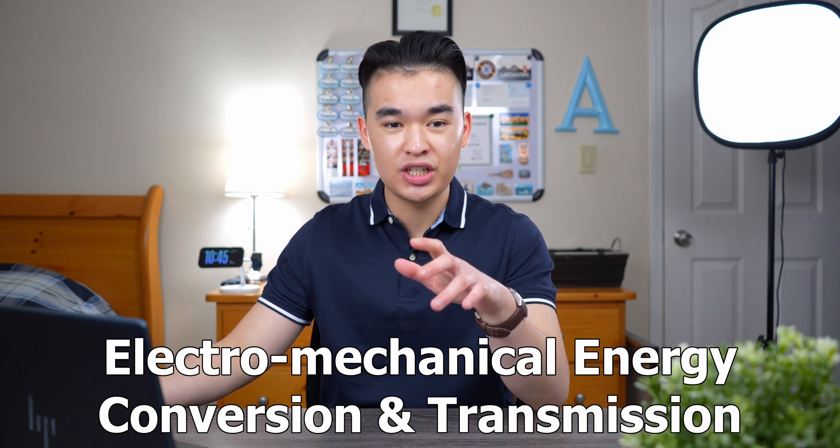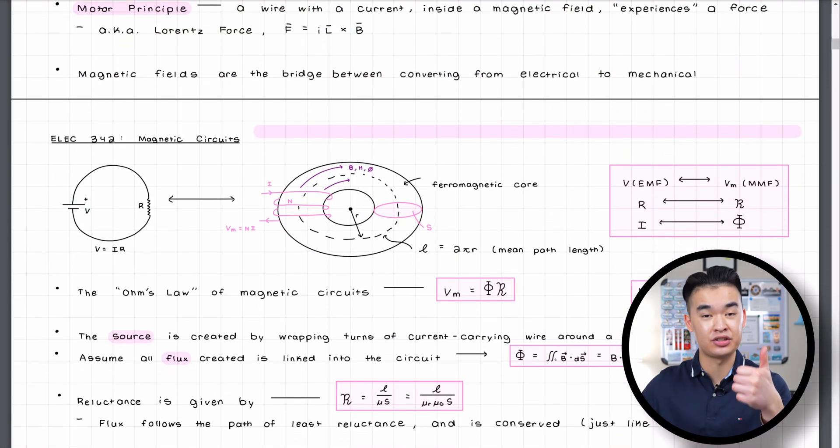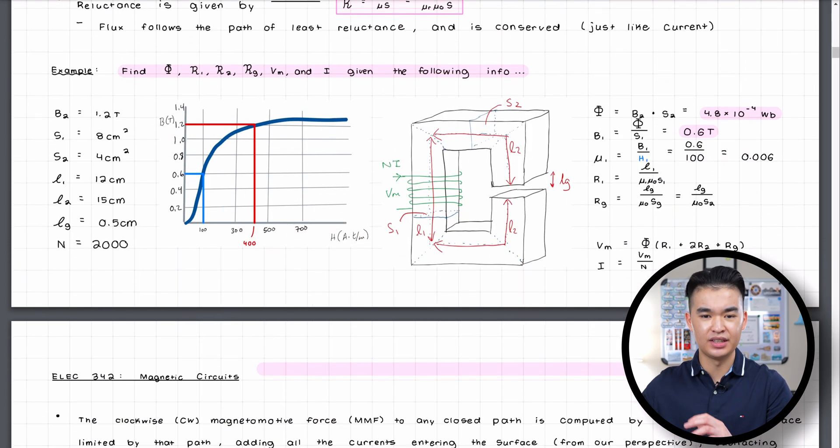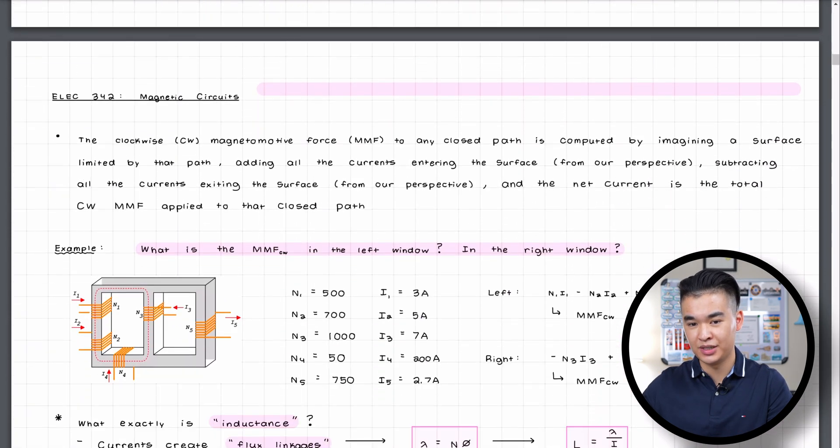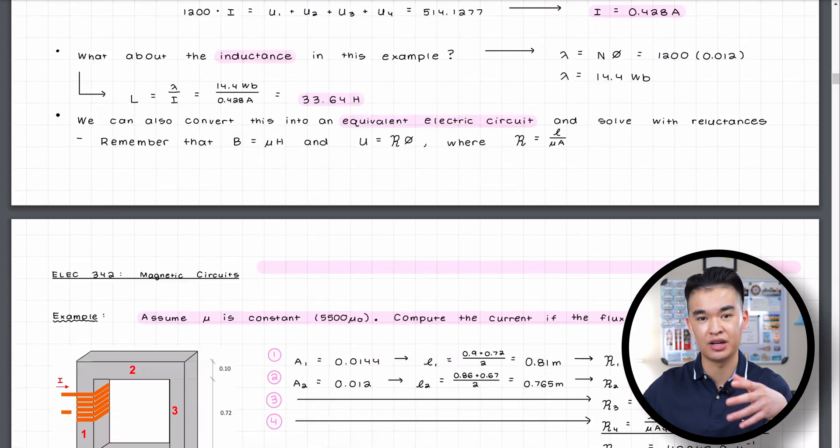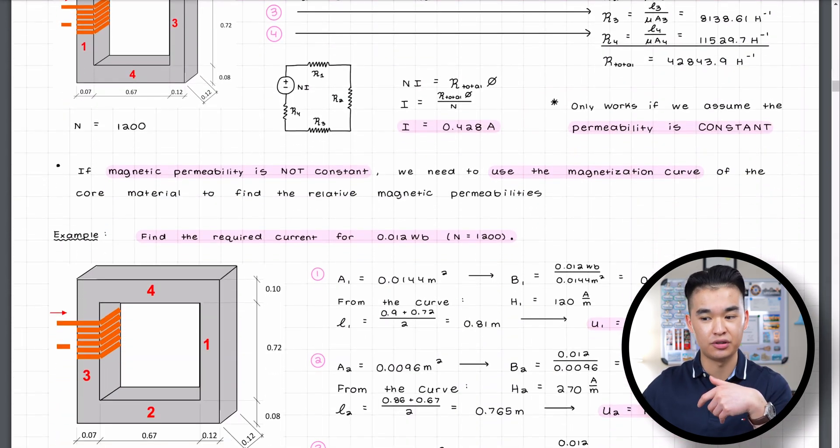We're going to start with ELEC342 which happens to be my second highest grade in my entire uni career so far. This course covers electromechanical energy conversion and transmission, touching on concepts such as magnetic circuits, transformers, motors, and generators. The notes that I took for this course were from a mix of the lecture slides and a set of YouTube videos that the professor had posted on his YouTube channel.